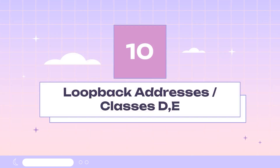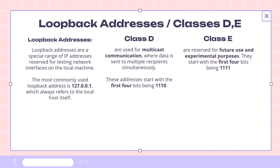Let's not forget about loopback addresses. Loopback addresses are a special range of IP addresses reserved for testing network interfaces on the local machine. The most commonly used loopback address is 127.0.0.1, which always refers to the local host itself — it's like talking to yourself within the computer. There are also two more classes: Class D and Class E. Class D addresses are used for multicast communication, where data is sent to multiple recipients simultaneously — these start with the first four bits being 1110. Class E addresses are reserved for future use and experimental purposes, starting with the first four bits being 1111.